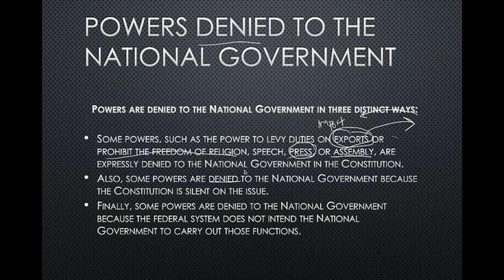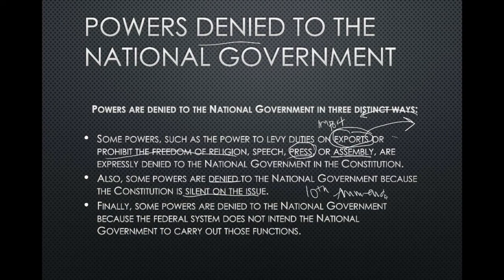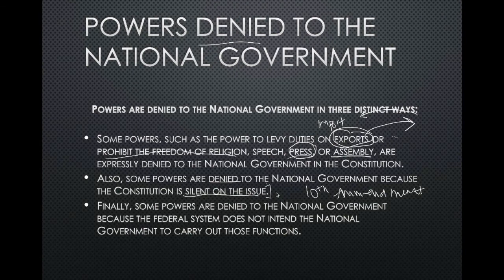The Constitution uses very specific language — 'Congress cannot,' 'Congress shall not,' 'Congress will not' — to spell out prohibited actions. And where the Constitution is silent on an issue, the 10th Amendment steps in. It basically says that powers not delegated to the federal government by the Constitution are reserved to the states or to the people. The federal government can't simply claim authority over something just because the Constitution doesn't mention it — that's the whole point of limiting the government.